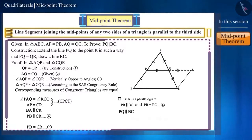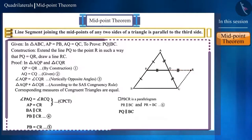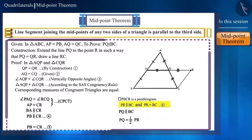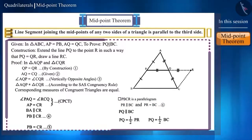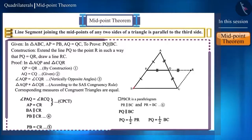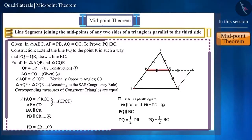Friends, we know that PQ equals QR. Hence, we can write that PQ is half of PR. And from equation 6, PR and BC are also equal. So if we write BC in place of PR, we get the side PQ as half of the side BC. The point to note here is that the length of the line segment formed by joining the midpoints of two sides is always half the length of the third side.